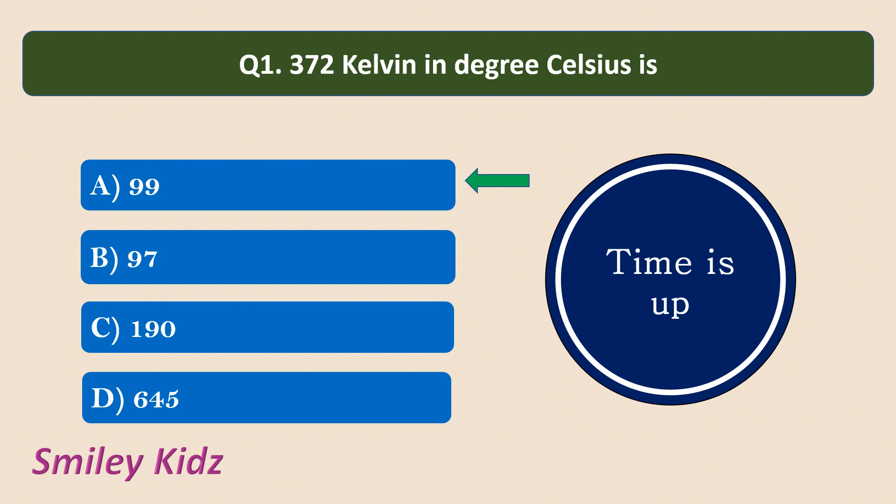We know that to convert Celsius to Kelvin, we add 273. But here in this question, we need to convert the given Kelvin scale to the Celsius scale. So, 372 Kelvin when converted to degree Celsius, we subtract 273 from 372 and we get 99. So, 372 Kelvin in degree Celsius is 99.